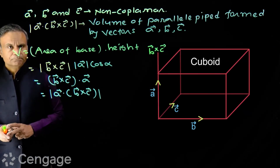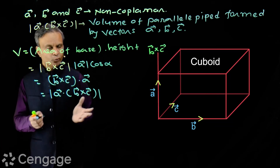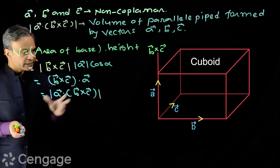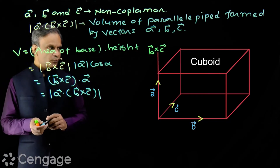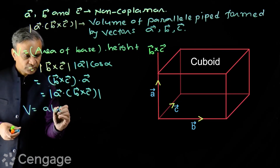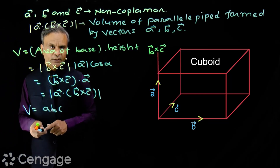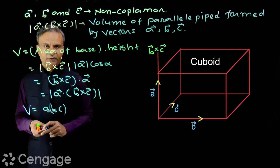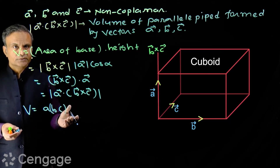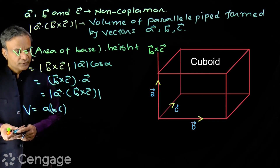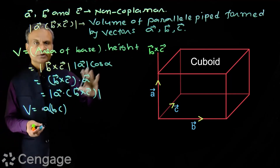Now, a special case of the parallelepiped is a cuboid, in which all faces are rectangles. This means vectors A, B, and C are perpendicular to each other. Then the volume of this cuboid will simply be |A| times |B| times |C|, where |A|, |B|, and |C| are the lengths of vectors A, B, and C. Here the area of the base is |B| times |C| and the height is |A|, with angle alpha equal to zero since B cross C and A are parallel. So volume equals |A| times |B| times |C|, which we already knew and is now verified.